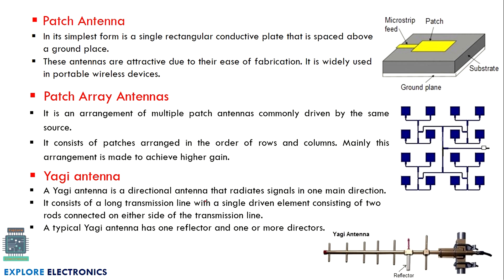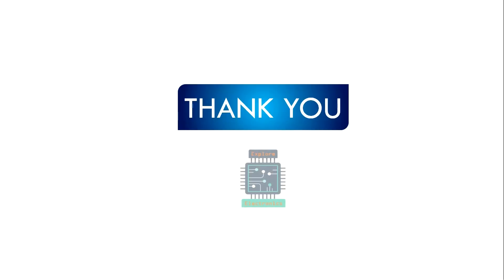The Yagi antenna is a directional antenna that radiates signals in one main direction, so we need to set the direction of the antenna to receive the maximum signal. It consists of a long transmission line with a single driven element consisting of two rods connected on either side of the antenna line. A typical Yagi antenna has one reflector and one or more directors. These are the different types of antennas used in particular applications.